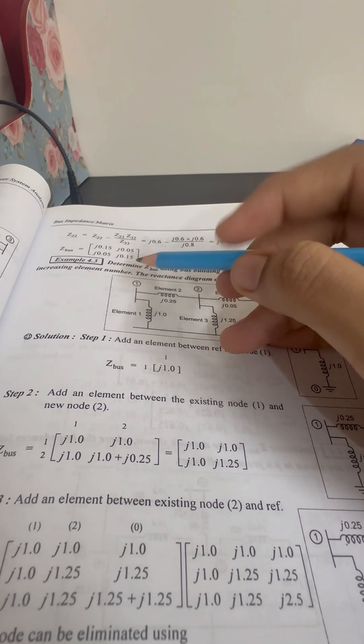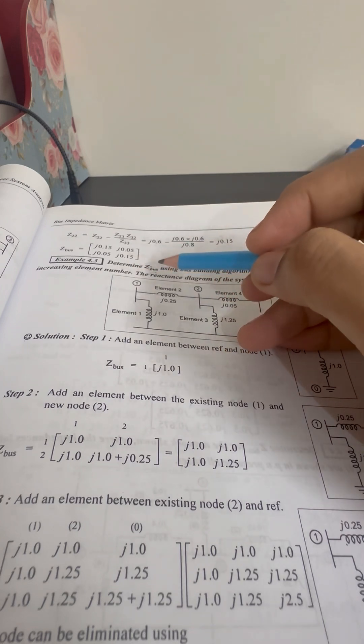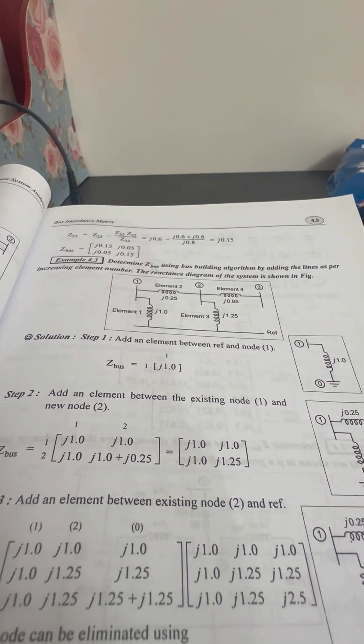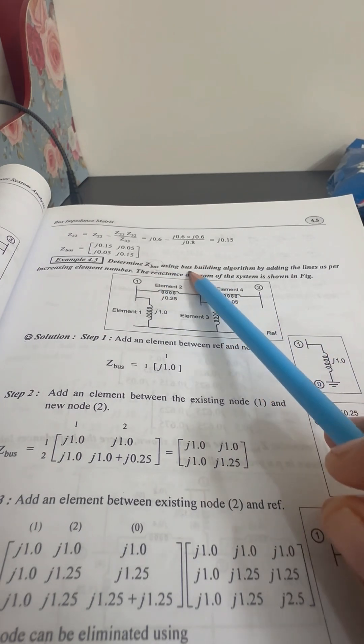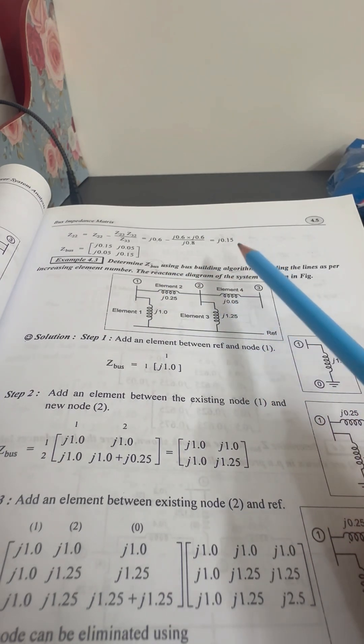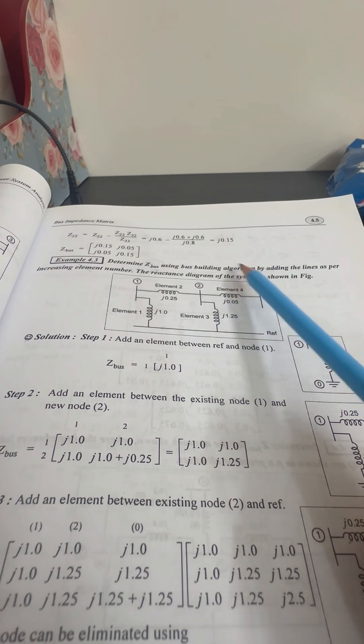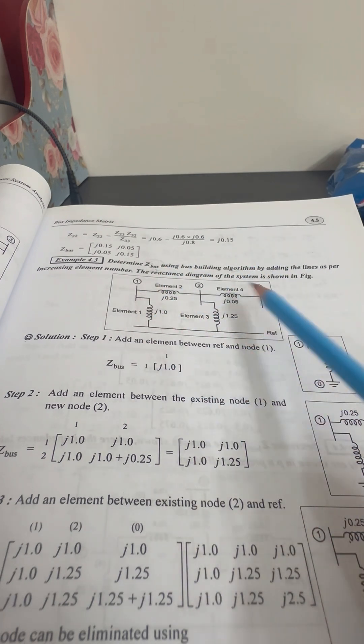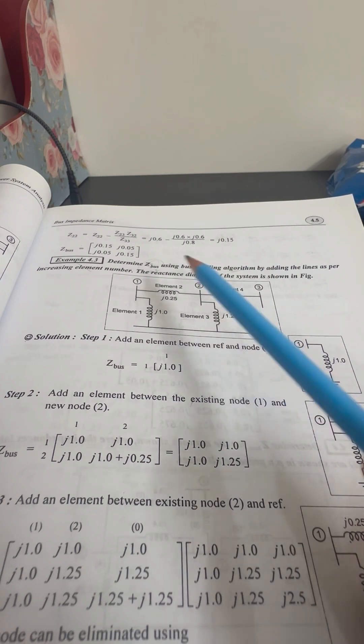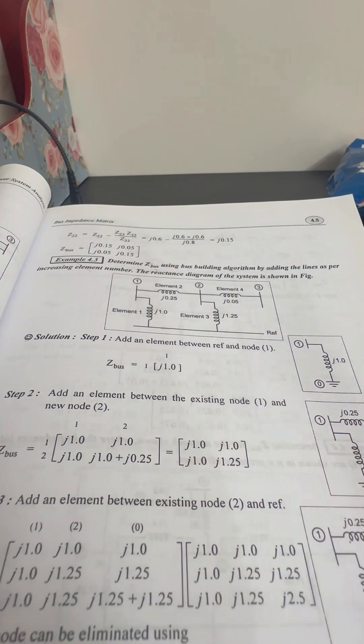In the previous video, you can check how the Bus Admittance Matrix is. You can determine the Z-Bus by using the Bus Building algorithm. We can directly find out the Bus Impedance Matrix with the Reactance Diagram.